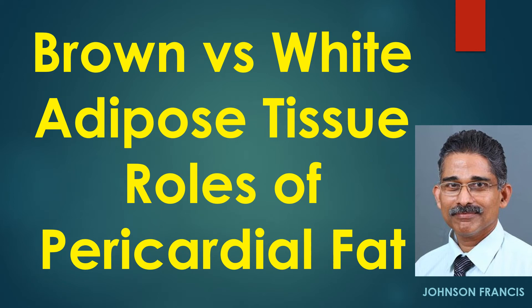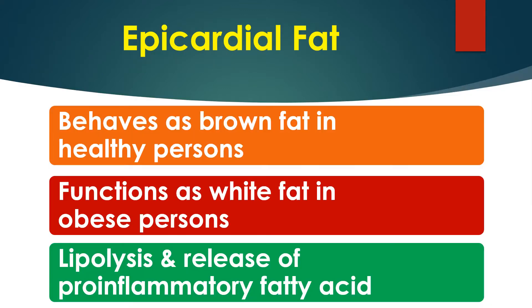Pericardial fat can behave both as brown and white adipose tissue in different situations. In healthy persons, epicardial fat behaves like brown adipose tissue and utilises fatty acids, preventing local pro-inflammatory action and providing nutrition to adjacent tissue. On the other hand, in obesity, it functions like white adipose tissue, which causes lipolysis and release of fatty acids that are pro-inflammatory.